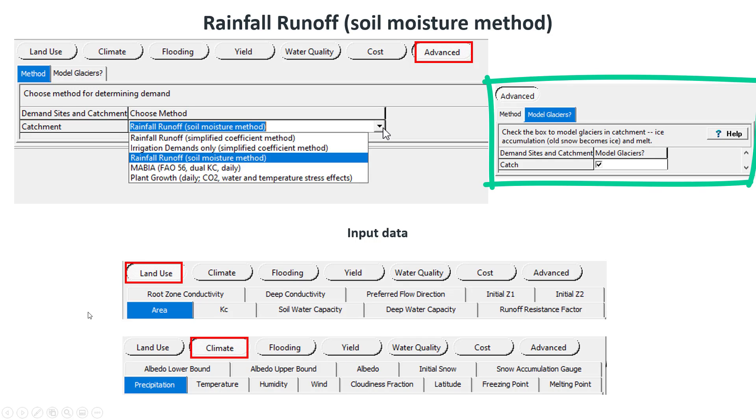Besides, this method has the option to activate a glacier module to simulate the accumulation and melting of ice on the land surface. If this module is activated, other input variables would be required.